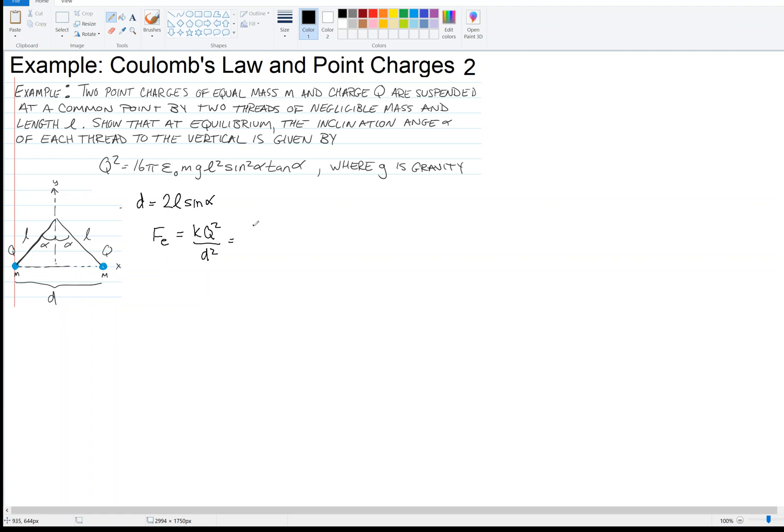That separation distance comes into play here: this is KQ² over 4L² sine² alpha. You'll notice that we already have the sine squared alpha in our problem, so that's good.